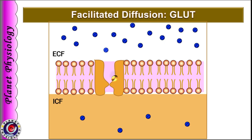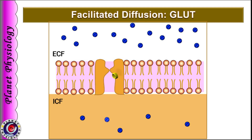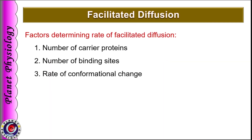Now let us understand the working mechanism of GLUT. This is the glucose transporter with its binding site for glucose. This protein does not allow glucose to freely enter the cell. Binding of glucose with its binding site initiates a conformational change in the carrier protein, and the carrier opens on the interior side of the cell. Once it opens to the interior, glucose is released from its binding site and enters the intracellular fluid. The rate of diffusion in facilitated diffusion is determined by the number of carrier proteins available, the number of binding sites on the carrier protein, and the rate of conformational change of the carrier protein.